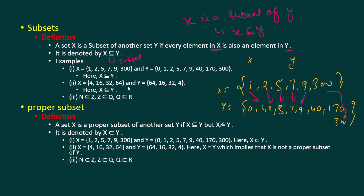We represent this with the subset symbol: X ⊆ Y. Also remember that N is a subset of Z, because integers contain all natural numbers. Z is a subset of Q (rational numbers), and Q is a subset of R (real numbers).